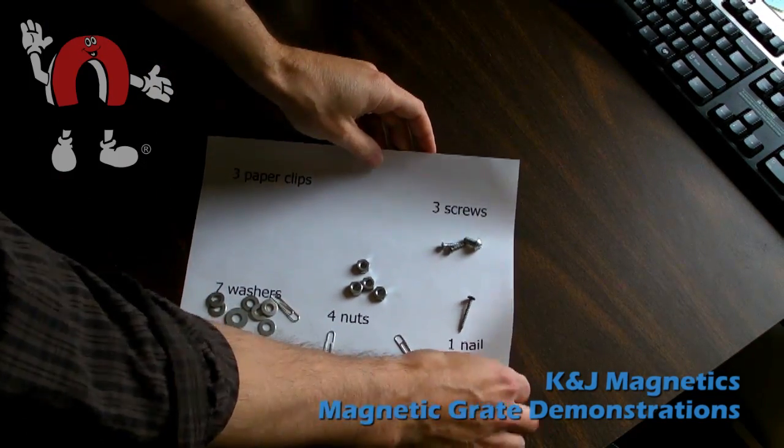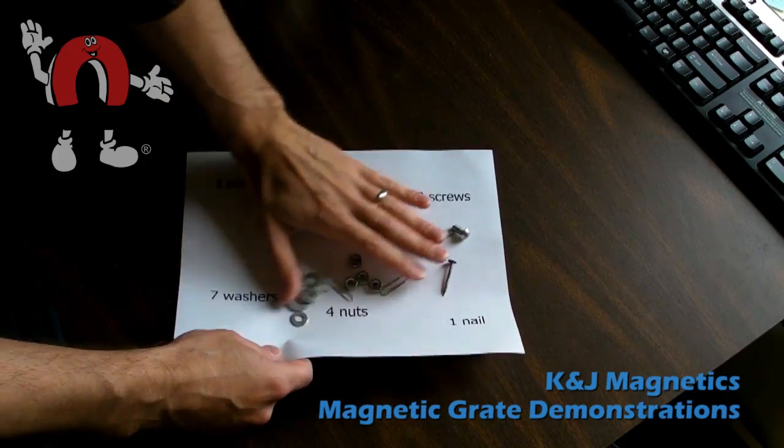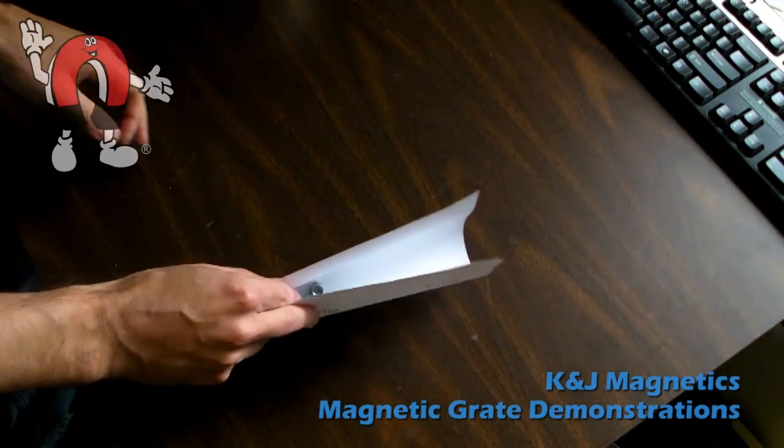Here's a bunch of random steel hardware, all of which is attracted to magnets, and we can test out our little assembly by dumping it through.